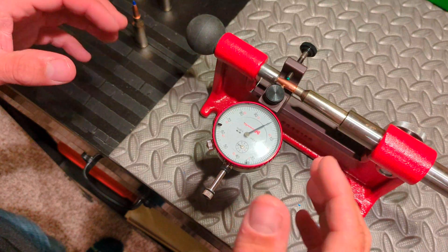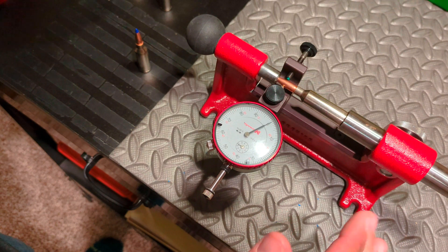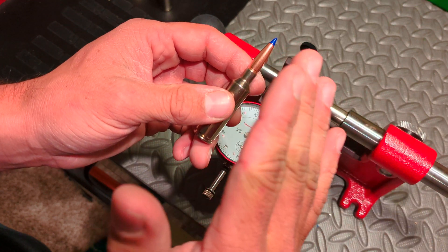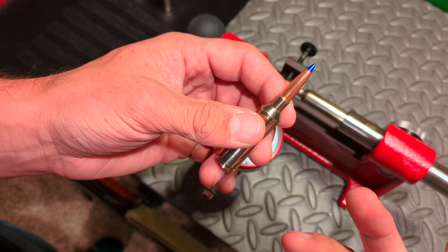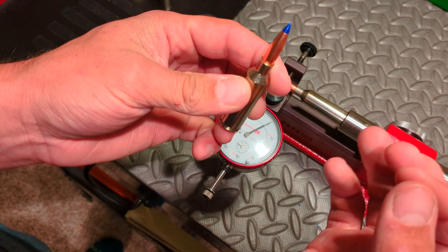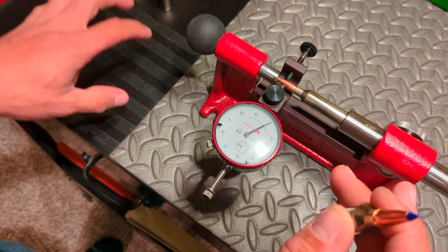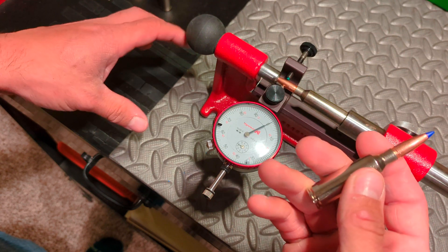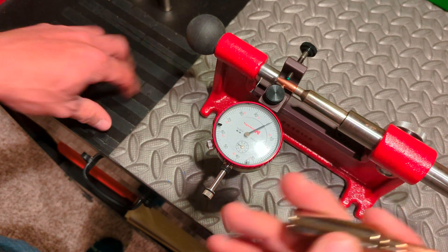Before we get into concentricity numbers, I want to reiterate, I am loading these at one length at different powder charges, and we'll shoot for groups and extreme spread and standard deviation velocities. And once we figure out something that we like, we will go back and fine tune those numbers in that group with seating depth. So I'm not doing a bunch of seating depth right off the bat. I'm just picking one, which is pretty much our max case overall length or our max magazine overall length. And that's what we're going to start with. And then we will work from there to fine tune our loads.